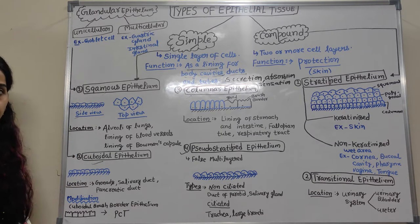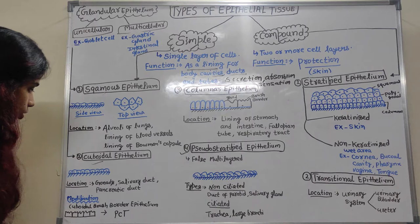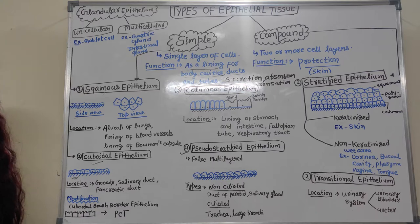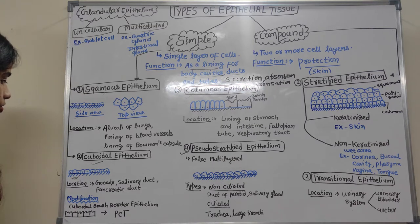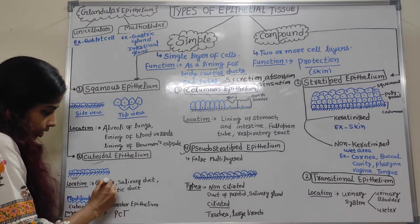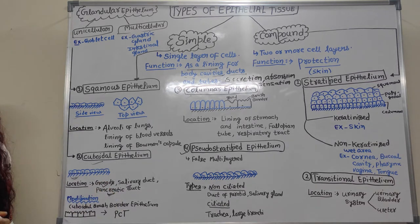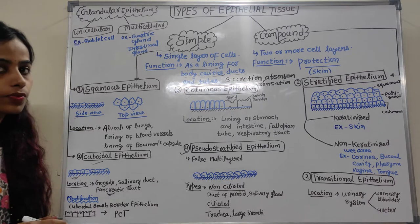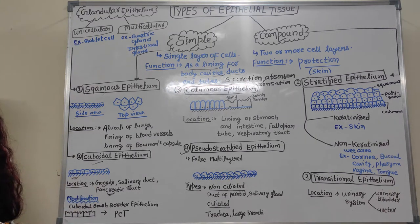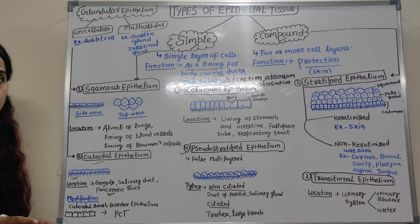Cuboidal epithelium has a cube-like structure. It is located in gonads, cerebri ducts, and pancreatic ducts. Gonads contain germinal epithelium, where ova and sperms are formed, so another name for cuboidal epithelium is germinal epithelium.